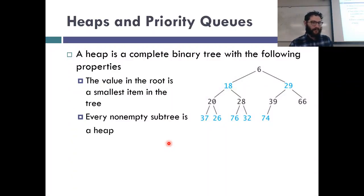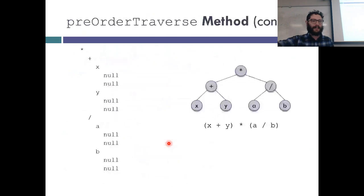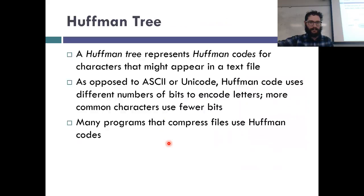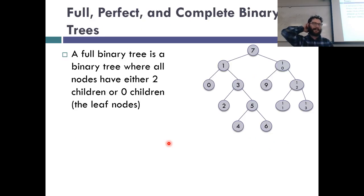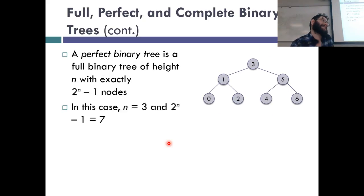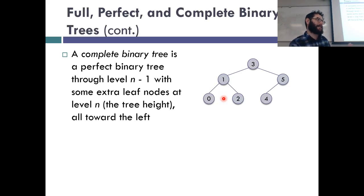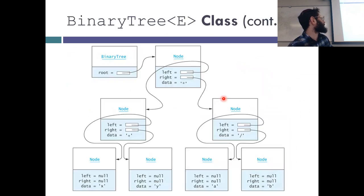Remember the definitions of full, perfect, and complete binary trees. A full tree means all nodes have either two children or no children. A perfect tree is completely balanced with everything filled up. A complete tree is complete up to the last level, but on the bottom level all nodes are pushed to the left — so there's no gap. All heaps are complete trees.